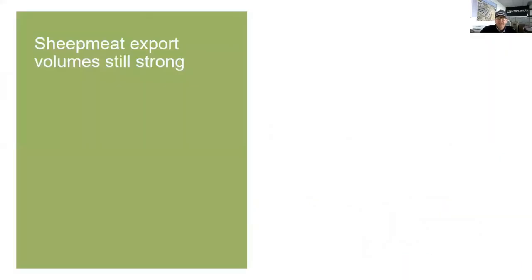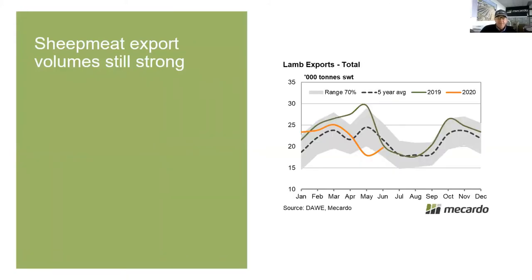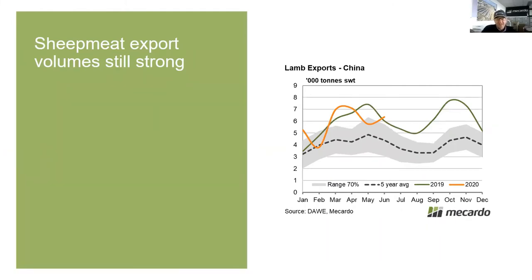Sheep export volumes are still really strong. We've had strong exports — last year we slaughtered a lot of sheep, and lamb numbers are still at a good level despite COVID-19 and despite the falling sheep flock. Looking at China, last year the green line was well above the five-year average, driving the market. There was a real hiccup in February coinciding with the big impact of COVID in China — it was very hard to get shipping and logistics. But the recovery in March, April, May, and now June has been extraordinary.